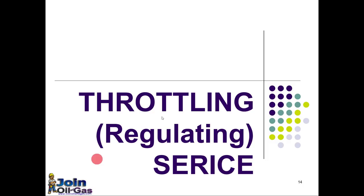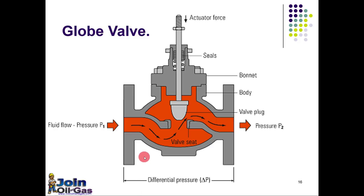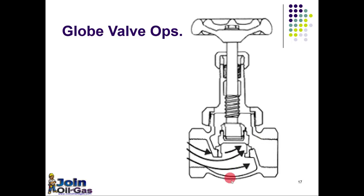Now let's see the throttling or regulating service valves. For this service we mostly use a globe valve. A globe valve is shown here with various parts: valve seat, body, bonnet, stem seal, and a valve disc. By lifting or lowering the stem, it will increase or decrease the opening — this is how the flow is controlled or regulated. When the disc is open there is flow, and when it is lowered the valve is closed and there is no flow.